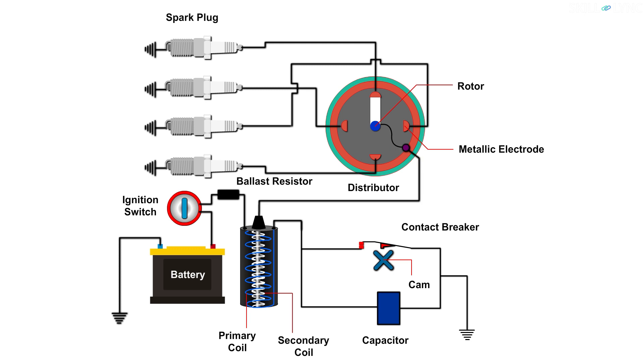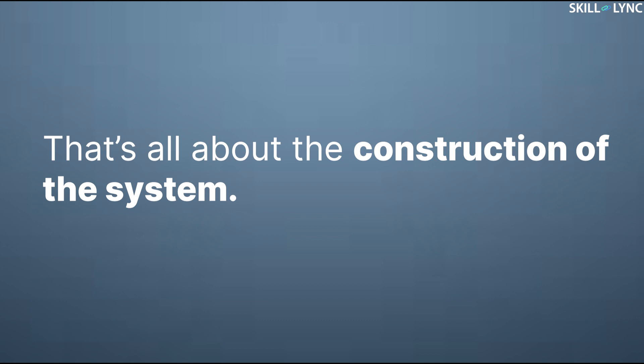The other end of the secondary coil of the ignition coil is connected to a high-tension wire which is capable of carrying current of high voltage. This in turn is connected to the rotor of the distributor. Then the metallic electrodes of the distributor are connected to the central electrode of the spark plugs. The secondary coil, distributor, and the spark plugs make up the secondary circuit. Well, that's it for the construction of the system.